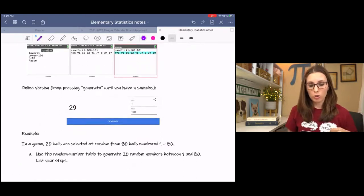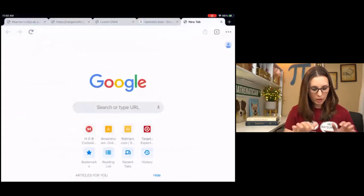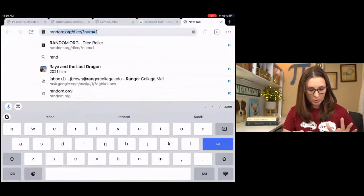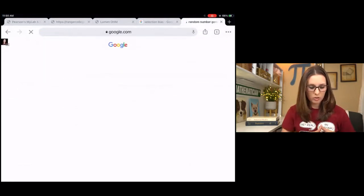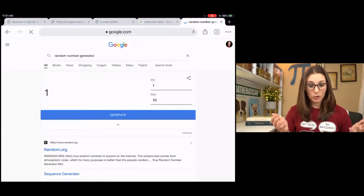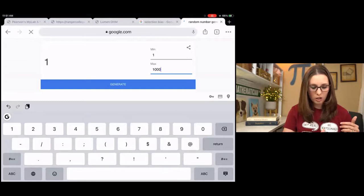If you go to Google and you search random number generator, it's going to pop up very soon and it's right there. So you just put in your minimum, your maximum. We'll do a thousand. That's what we did in the last video. Hit generate.